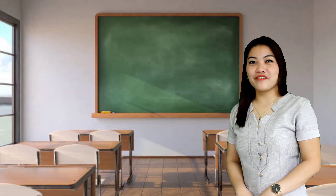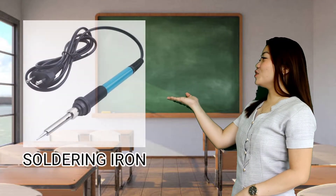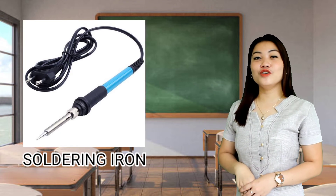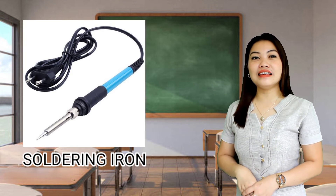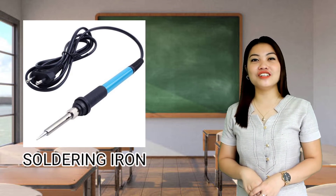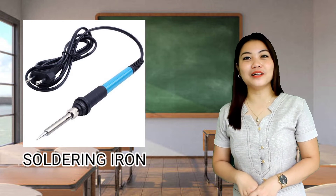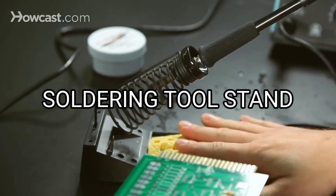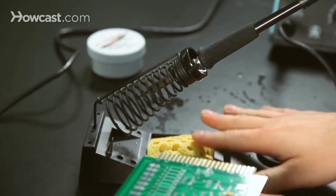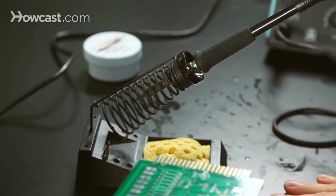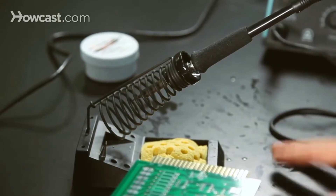Next, we have the soldering iron. It is a device used for applying heat to melt solder in attaching two metal parts. Next, we have the soldering tool stand. It is a place where the soldering iron is placed during usage.